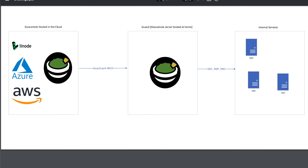In that video — which is linked in the upper right corner — I did not show you in detail how to encrypt the GUACD protocol running over port 4822. So if you followed that video, everything being sent between your cloud Guacamole instance and your internal GUACD server over port 4822 wasn't secured with TLS. I gave you an idea on how to do that at the end of the video, but a lot of you reached out about errors, which is why I made this video to correct those issues.